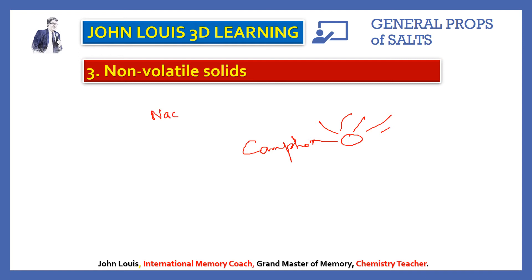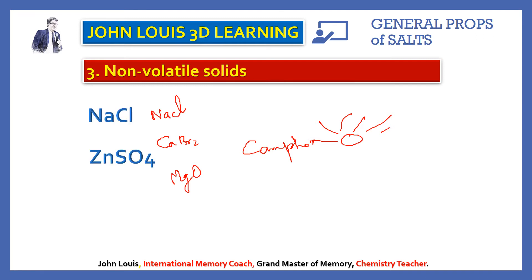Calcium bromide or magnesium oxide can melt, but they cannot be evaporated — that is the meaning of non-volatile solids. Any salt that can be evaporated is known as a volatile solid, but salts are generally non-volatile. Sodium chloride, zinc sulfate, magnesium oxide, calcium bromide — all are non-volatile in nature.